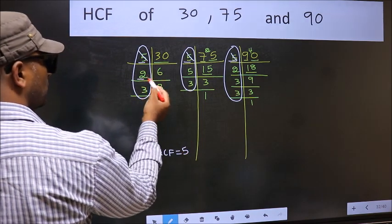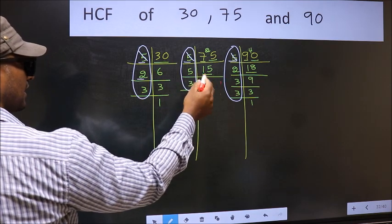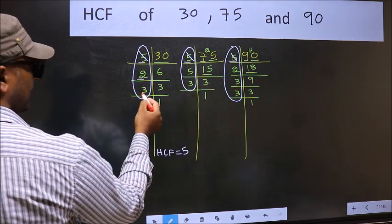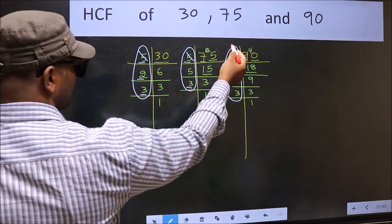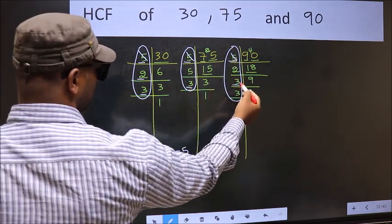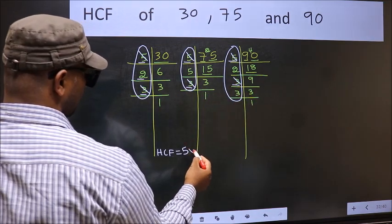Next number 2. Do we have 2 here? No. So no need for us to check in the other place. Next number 3. Do we have 3 here? Yes. So go to the next place. Do we have 3 here? Yes. So cut 3 right here.